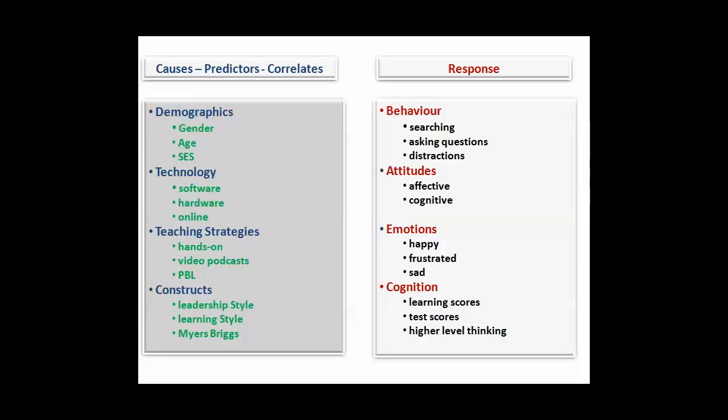Now, there may be qualitative research, and again, it still follows the same kind of structure. It's just more open-ended, so we may not know specifically what the actual things that we're looking at here. It may be more open-ended. We know there can be categorized into behavior, attitudes, emotions, and cognition. We just don't know ahead of time what we're looking for, so it might be just more open-ended what we're looking at.